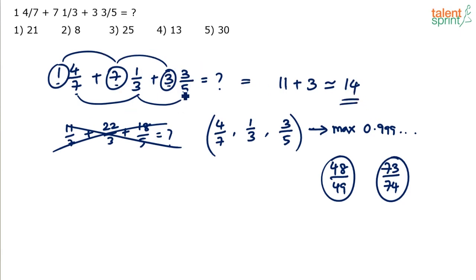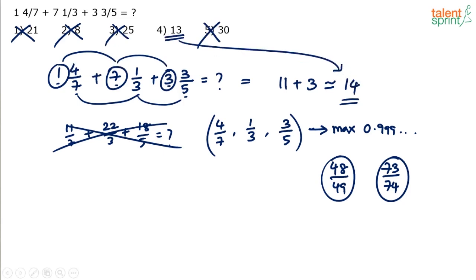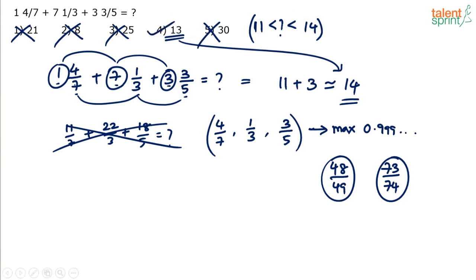The answer should be greater than 11 because the integers alone sum to 11, and less than 14 because the maximum fractional sum is 3. The only option between 11 and 14 is option 4, which is 13. So 13 is the answer. You don't have to write all these steps — you can mentally do the approximation and mark option 4.